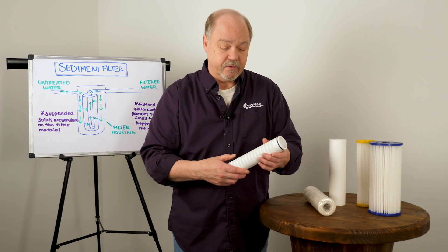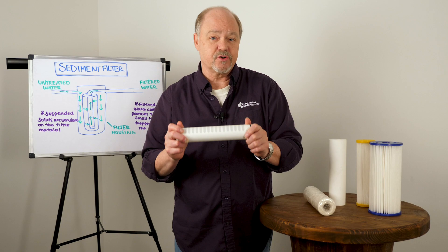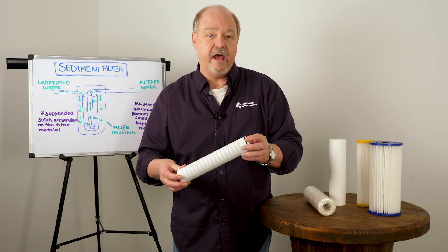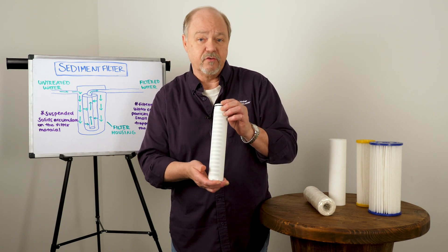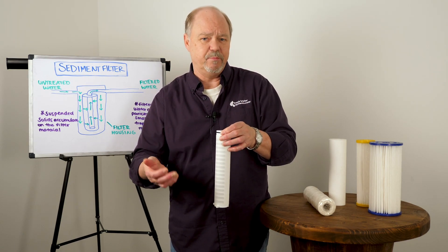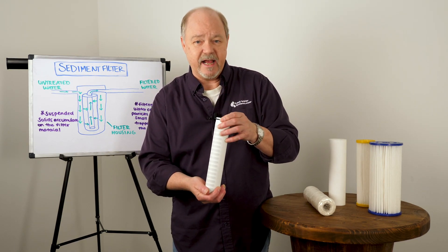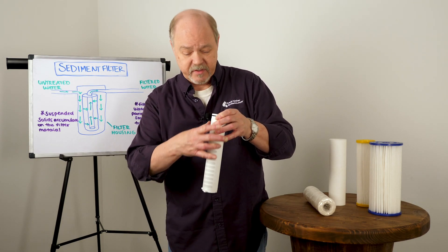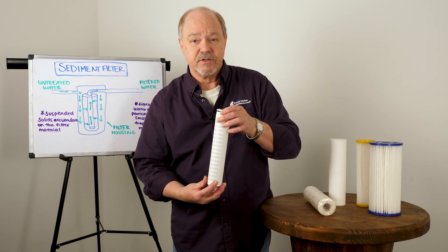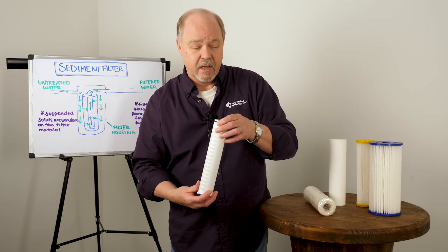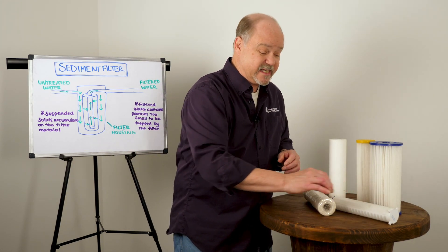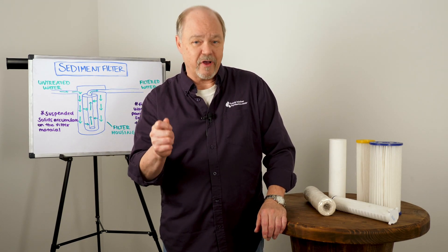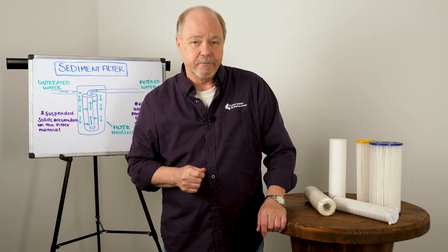And then we have filters like this — this is the screen for a spin down, and it is really designed to do the heavy lifting. This is the one designed to really get the big chunks out. It sits in a housing that we can dump and blow down every so often to send that big debris to the drain. But they're all doing the same thing: collecting particulate and solid debris from the water.